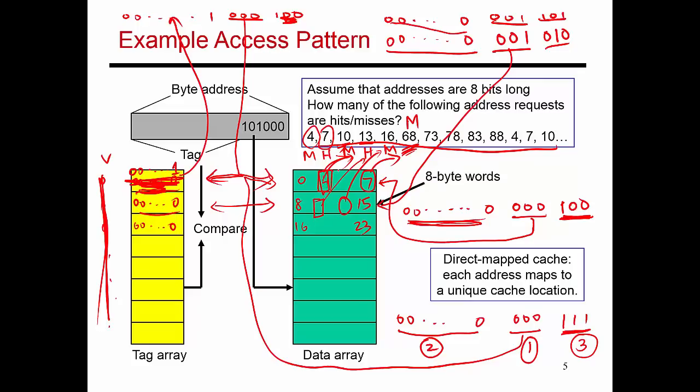And so as you continue through this example, you'll see that the access to 73 is a miss. The access to 78 turns out to be a hit because when I have a miss on 73, I bring in a block that contains addresses 72 through 79. So the access to 78 turns out to be a hit.